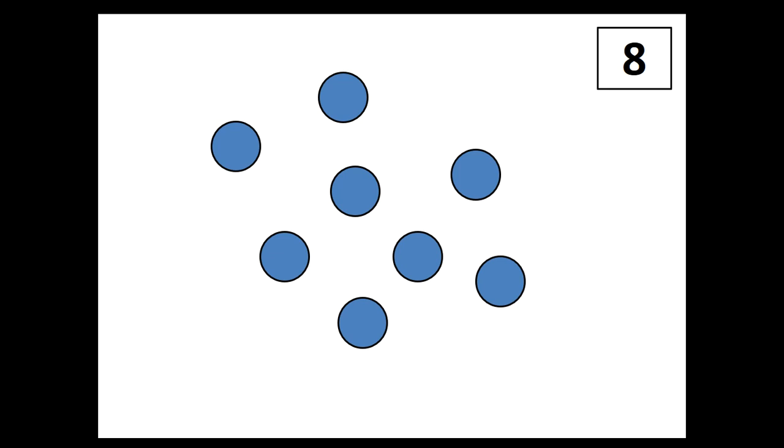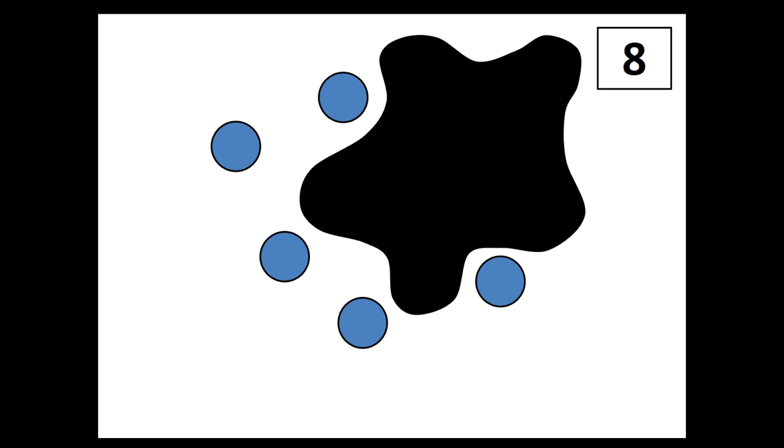All right, here comes the splat. Boys and girls, take a minute to pause and think about how many you think are underneath that splat. All right, Allie, what are you thinking? So I knew I wanted to do something different. So I saw one, two, three, four, five, and I thought, what plus five equals eight? And I knew that was three. So three dots should be underneath here.